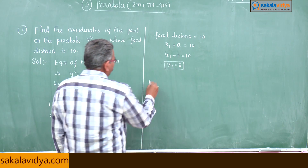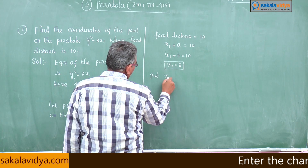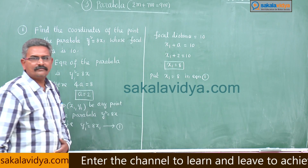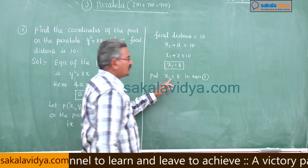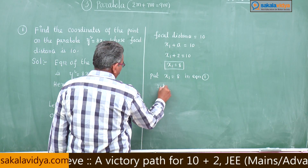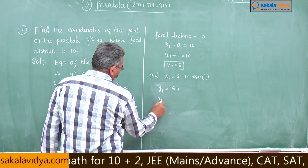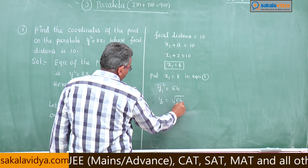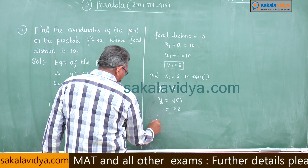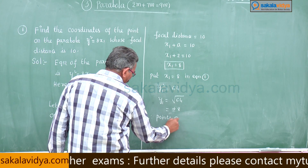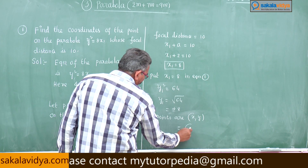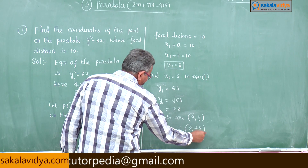Now put x₁ = 8 in equation 1. We get y₁² = 8 × 8 = 64, so y₁ = ±8. Therefore, the coordinates of the points on the parabola are (8, +8) and (8, −8).